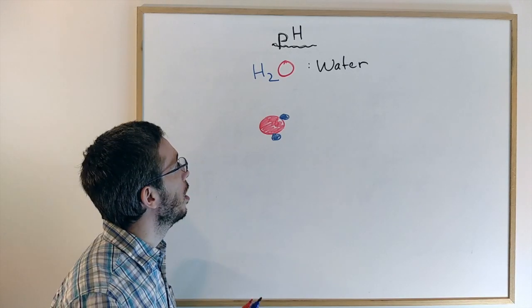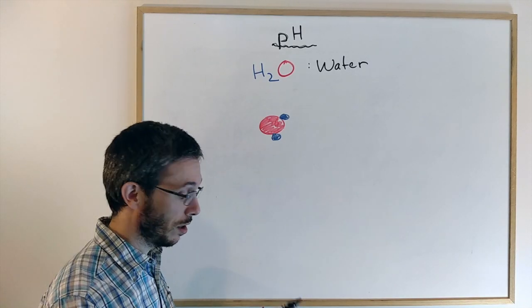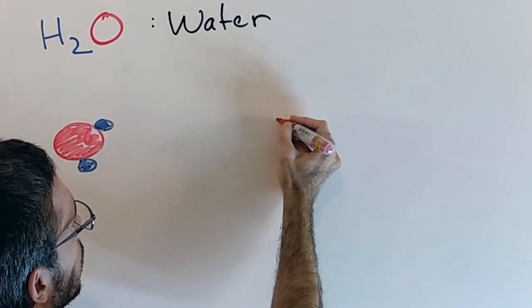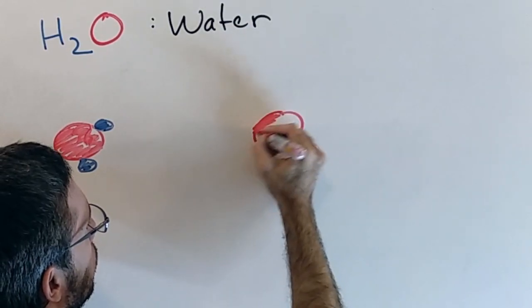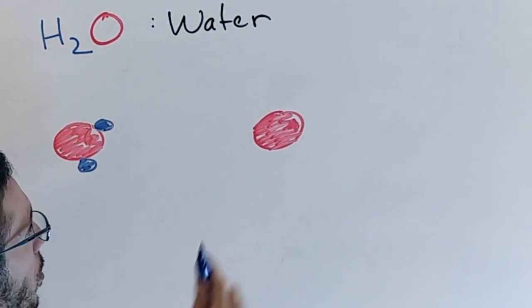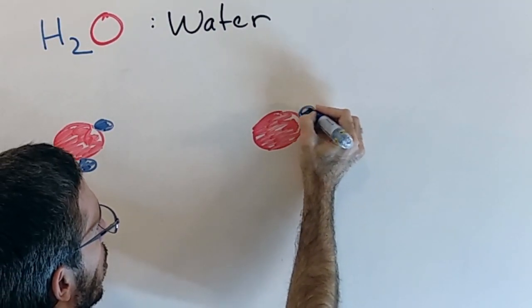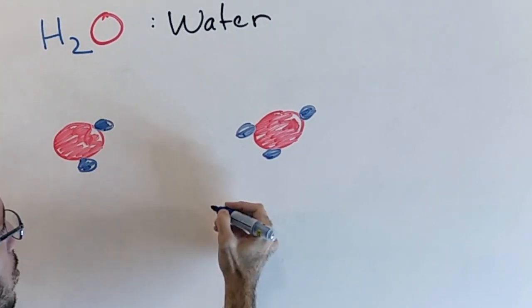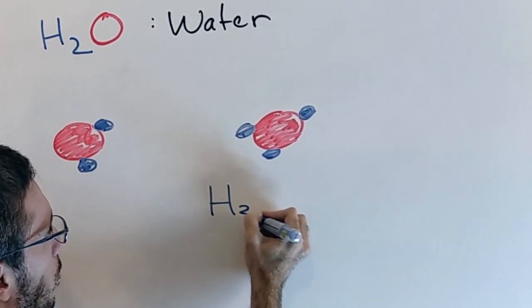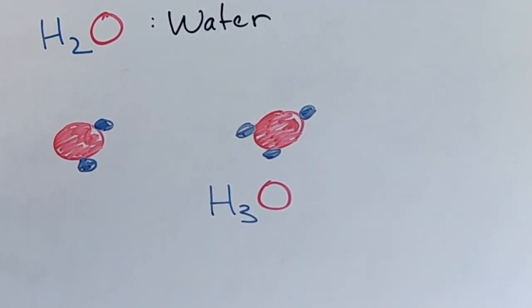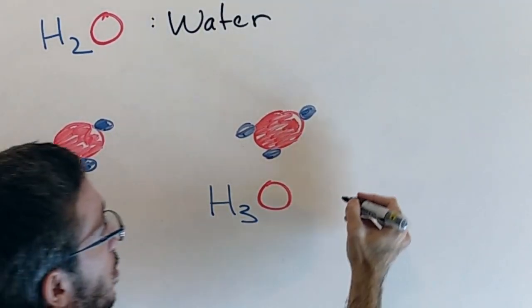Sometimes, however, you can also find this molecule here, one oxygen and three hydrogen. This one is called H3O and the name of it is hydronium.